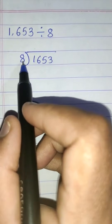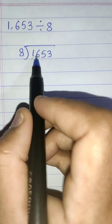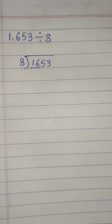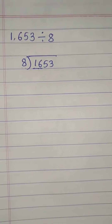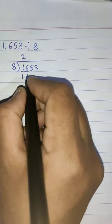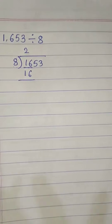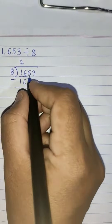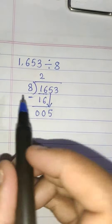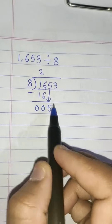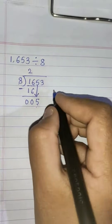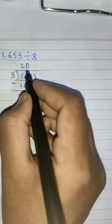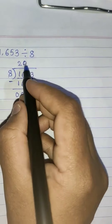Here 1 is smaller than 8, so you cannot divide 1 by 8. Take the next digit, making it 16. Read the 8 times table: 8×1=8, 8×2=16 — we get the exact number. Write 2 in the quotient. Subtract: 6 minus 6 is 0, 1 minus 1 is 0. Bring down the next digit 5. Since 5 is smaller than 8, you cannot divide it. Write 0 in the quotient and bring down the next digit 3, making it 53.